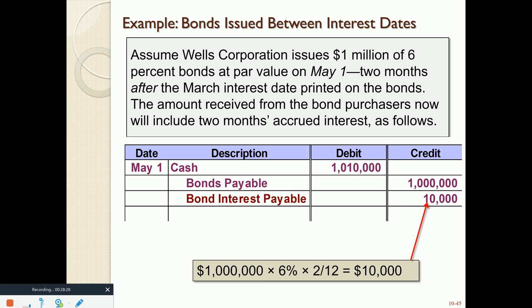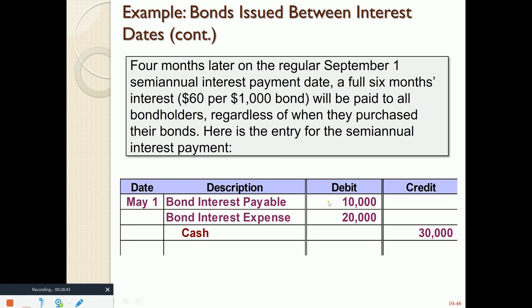On the next interest payment date — September 1st — they're going to get six months' worth of interest, but have they held the bonds for a full six months? No — they've only held them for four months: May, June, July, and August. So on September 1st, when interest payment checks of $30,000 are mailed — a full six months' worth of interest even though bondholders only held the bonds for four months — on a net basis they are getting four months' worth of interest. Note there is a typo in the date column: that date should say September 1, not May 1.